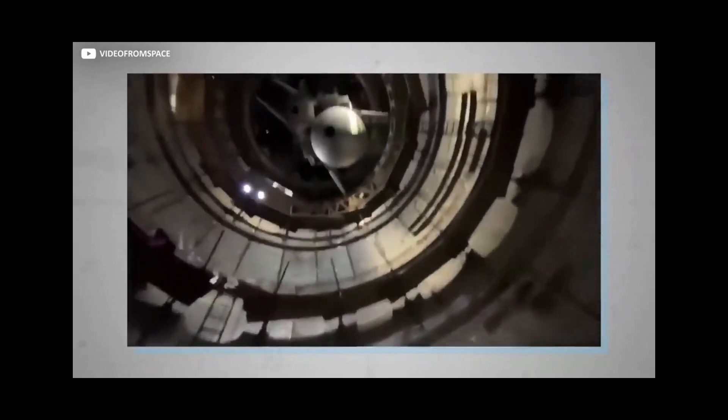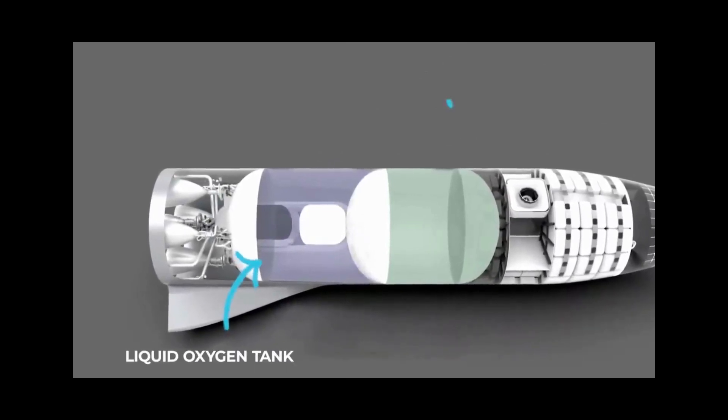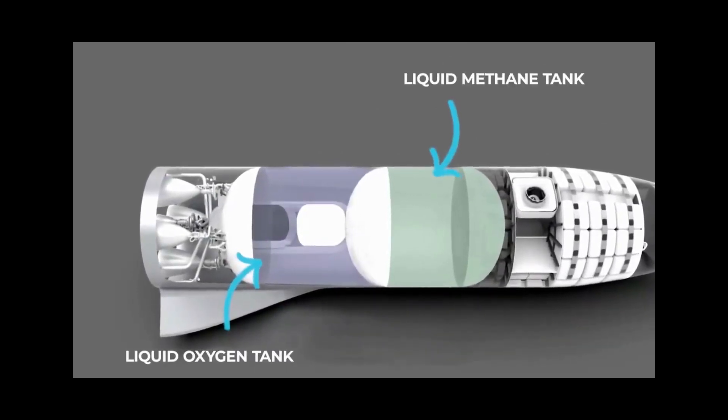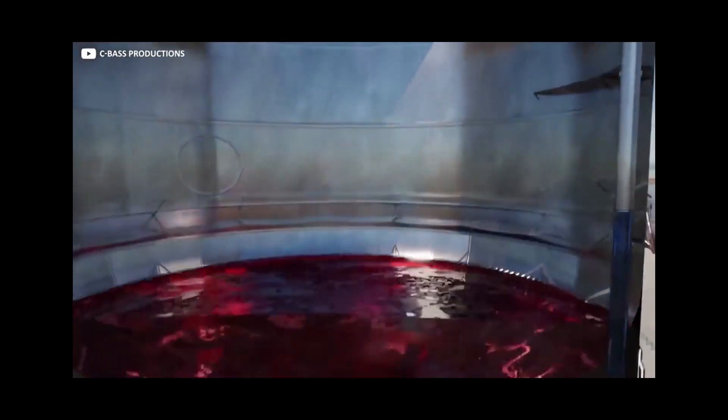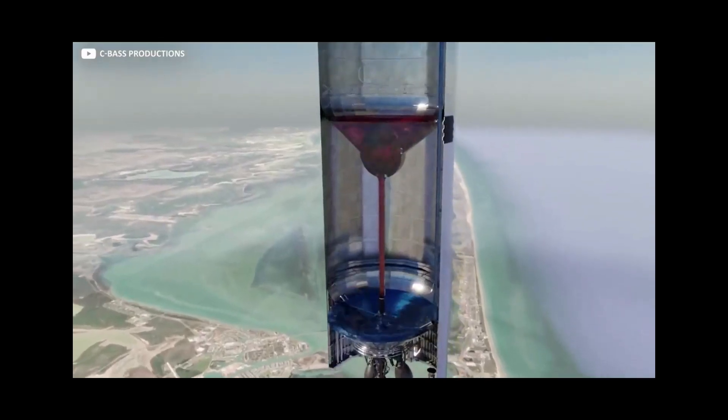But unlike its much leaner SpaceX Falcon cousin, which lands vertically almost as a matter of course nowadays, Starship is so huge it needs to do something different. Flaps are extended from the side of the rocket. The idea is these use the Earth's atmosphere to slow the descent. As Musk puts it, you're trying to create drag rather than lift. It's really the opposite of an aircraft.